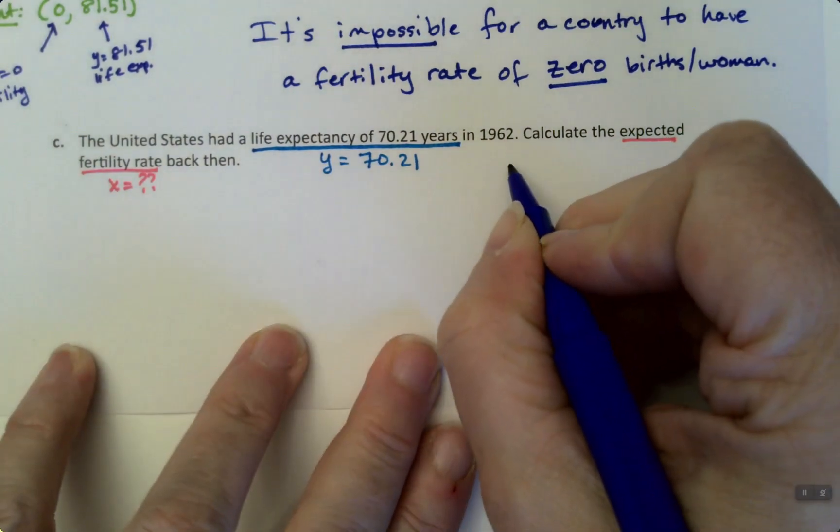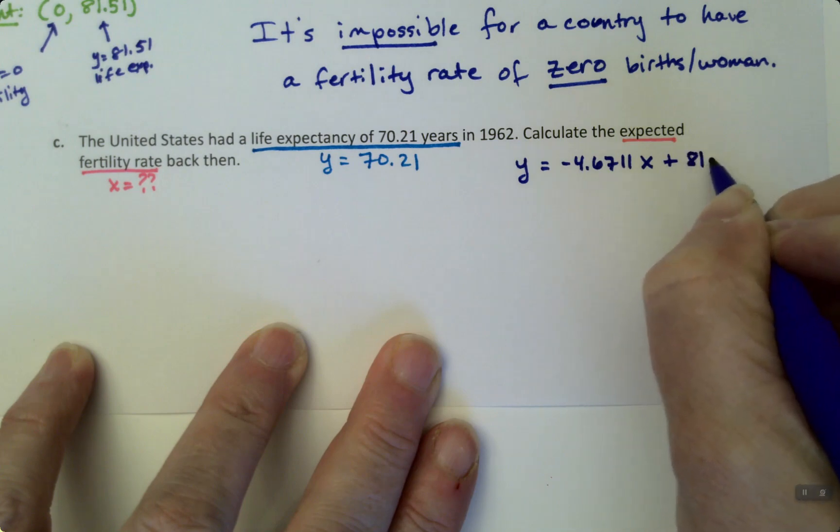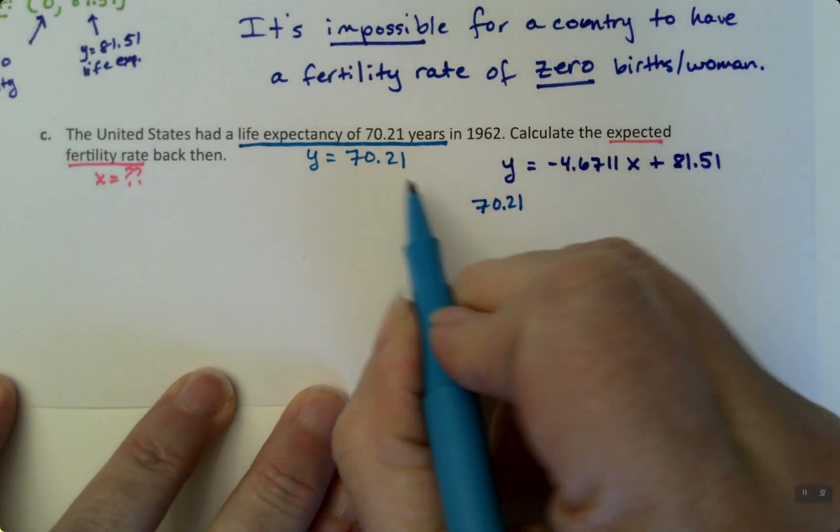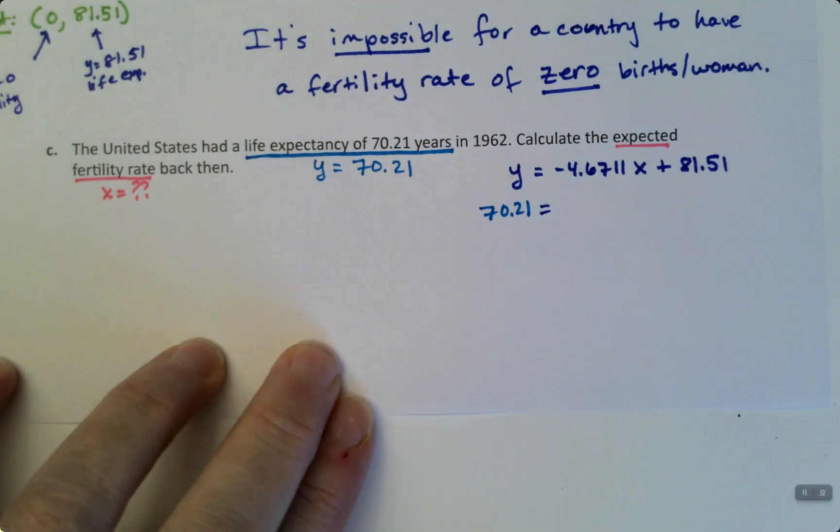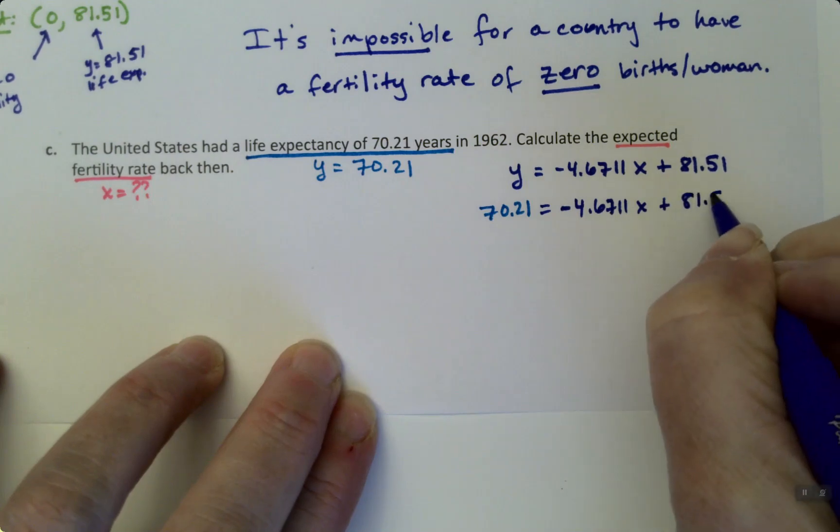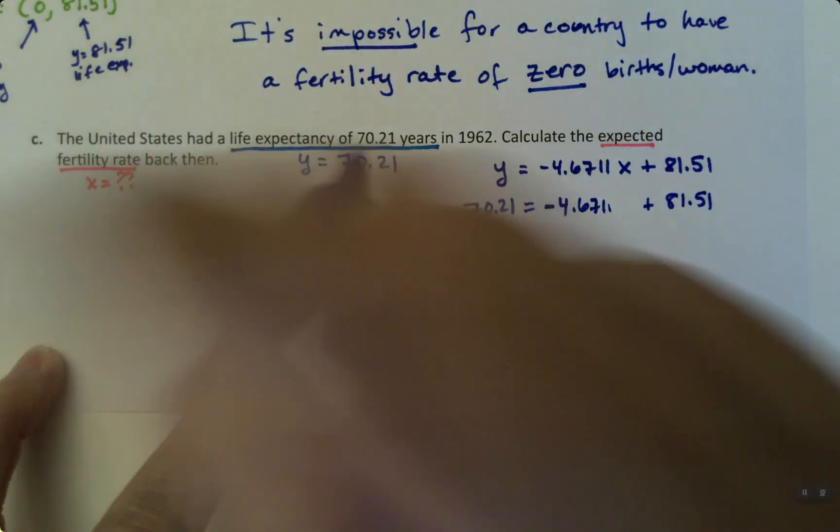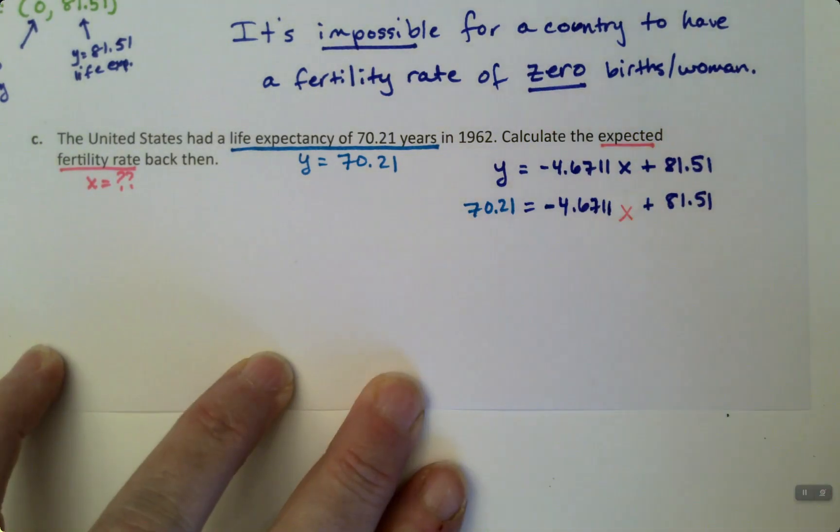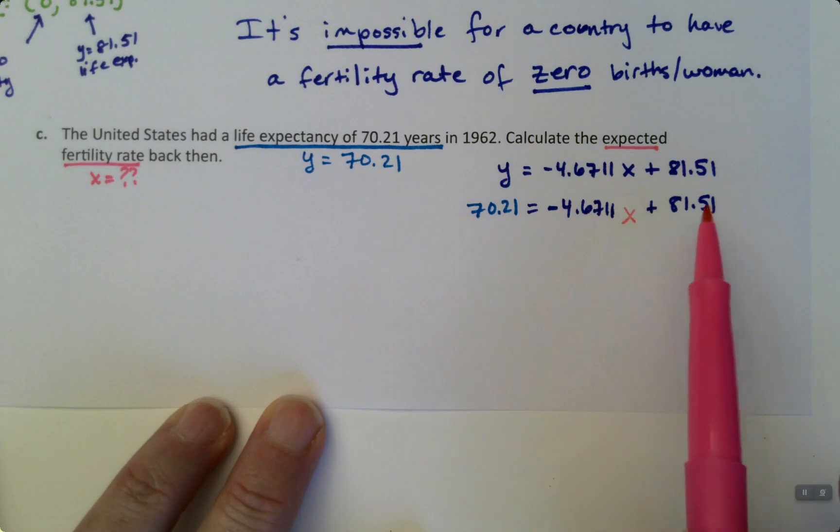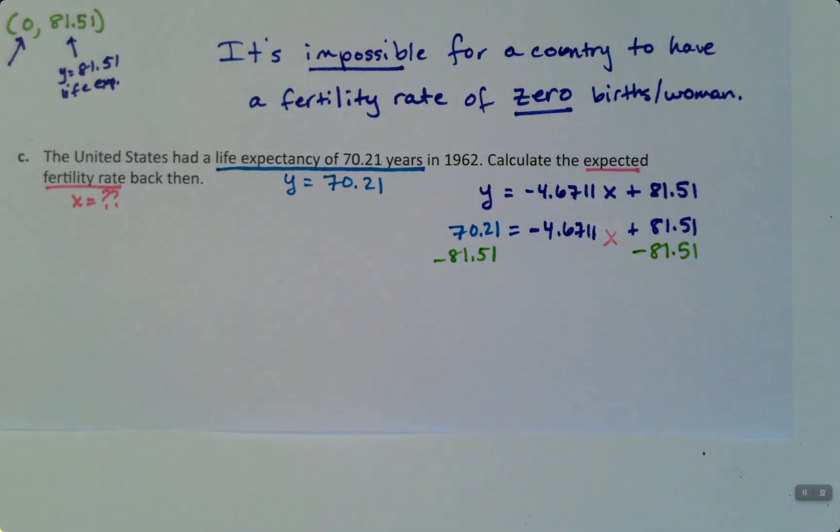Okay, so think about the equation. The equation is y equals negative 4.6711x plus 81.51. So then we would put 70.21 in here, because we know that that's 70.21. It's given to us. And that equals negative 4.6711x plus 81.51. And to keep my color coding correct here, I'll put that in pink. 711x. So x is what I'm looking for. And now this is just a basic algebra problem. We have to solve this for x. So the first thing you have to do is get rid of this 81.51 that's just hanging out there on its own. So you subtract 81.51 from both sides. So I'm going to go grab Desmos and do that.